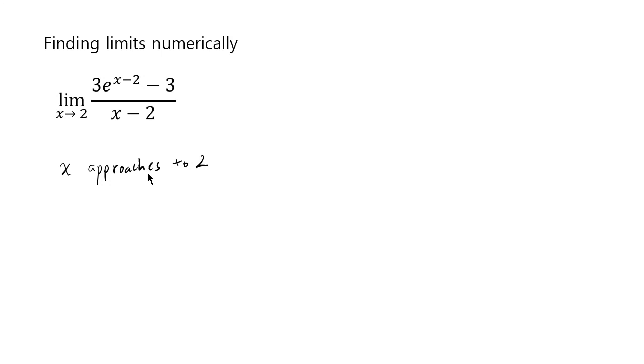And when you say x approaches 2, it actually means two possible things. It could be that x becomes like 2.1, 2.01, 2.001, 2.0001.